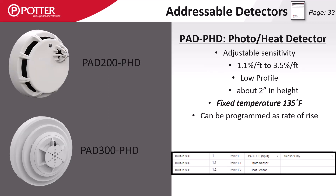The PAD PhD is a combination photo heat detector. POTR's combination detectors include individually mappable elements, and through the programming software the device can be configured as a single detector or split. This allows the individual elements to have the same characteristics of their standalone counterparts while only consuming a single SLC address. Heat detectors that are part of a multi-element detector have a fixed temperature set point of 135 degrees and are not adjustable.